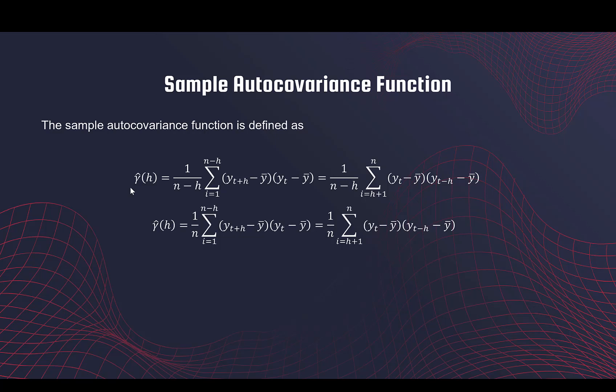We're going to tweak this just a little bit. Instead of dividing by n minus h, we're going to divide it by n because this results in some nicer properties for this covariance function. The nice property is that it gives us a positive definite estimator. We don't need to worry about this, but just remember that we're dividing by n.